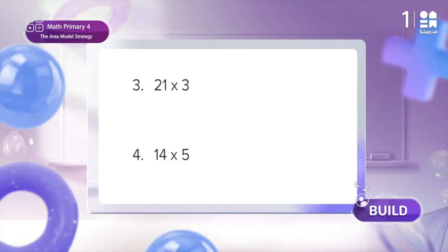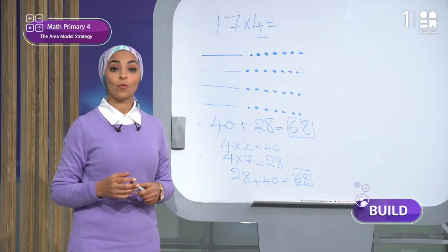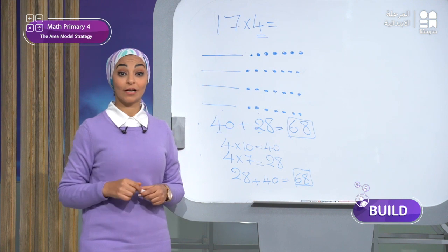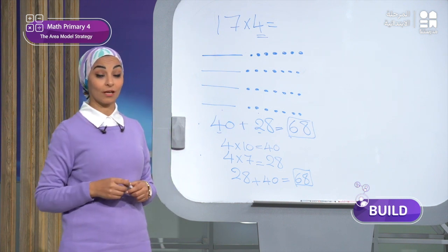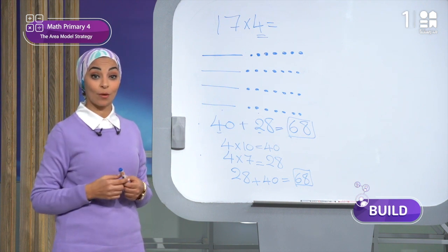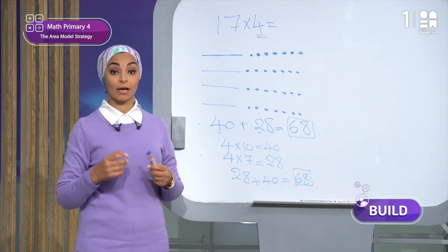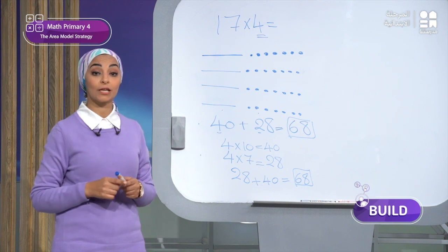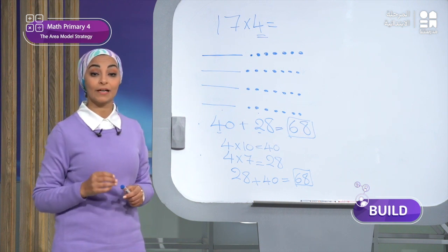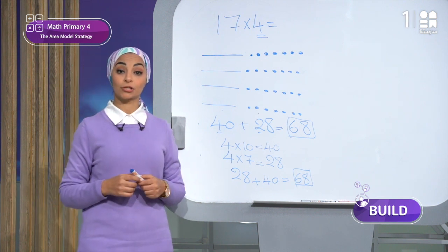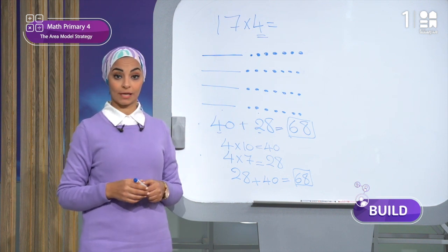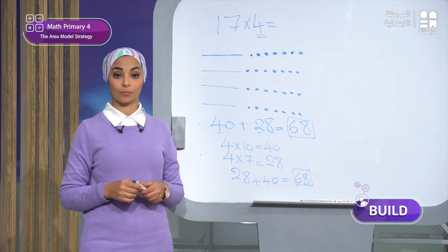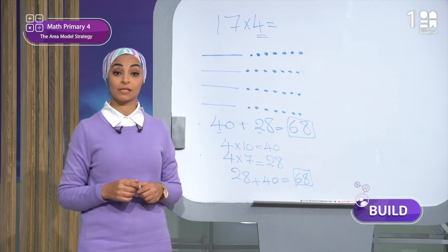Now we will learn a new multiplication strategy called the area model strategy. Do you remember the area rule for rectangles from Unit 4? It says that the area of a rectangle equals length times width. We will draw a rectangle to represent multiplication problems. The dimensions of the rectangle will be the factors, and we multiply them together to calculate the area, which will be the product.